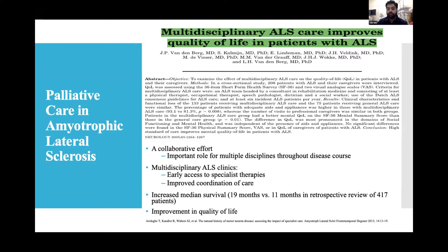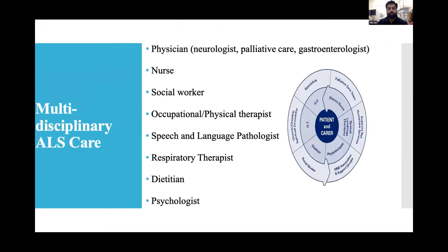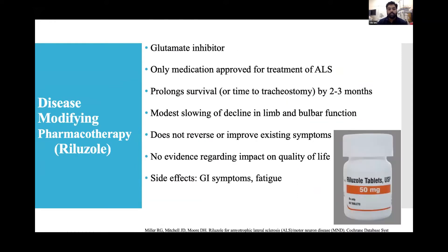Multidisciplinary ALS clinics increase median survival — 19 months versus 11 months in a retrospective review of 417 patients. The multidisciplinary team includes neurologists, palliative care specialists, gastroenterologists, nurses, social workers, occupational and physical therapists, speech and language pathologists, pulmonologists, dietitians, and psychologists. Riluzole, a glutamate inhibitor, is the only medication approved for ALS. It prolongs survival or time to tracheostomy by two to three months but does not reverse existing symptoms.